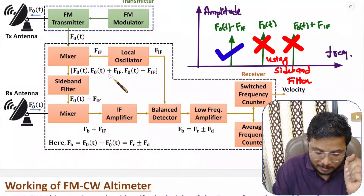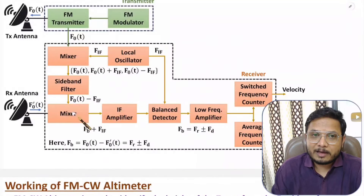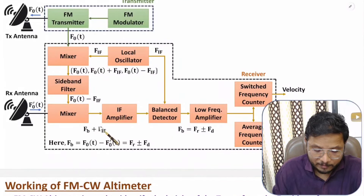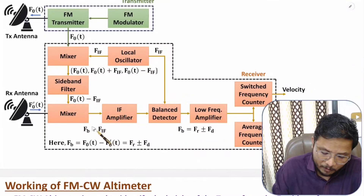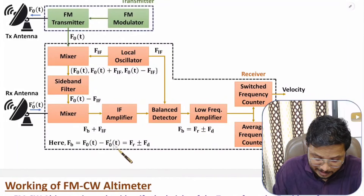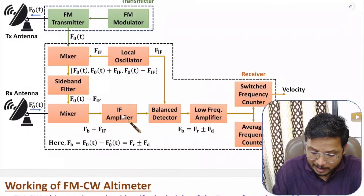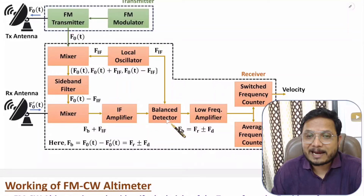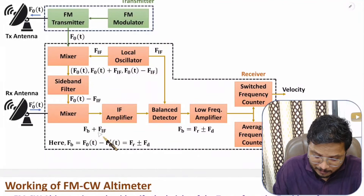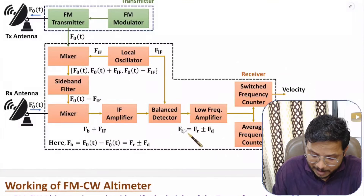F0(T) minus FIF is then given to a second mixer, along with the received echo signal F0'(T). The second mixer takes the difference of these two signals, and the output is beat frequency plus FIF. Previously we were getting beat frequency only, but now by adding FIF via the local oscillator, we have increased the input frequency of the receiver to FB plus FIF. This signal is given to an amplifier, then to a balanced detector — or second mixer — where the local oscillator provides FIF again, which is multiplied and the FIF component is eliminated. The final output is FB only — beat frequency.